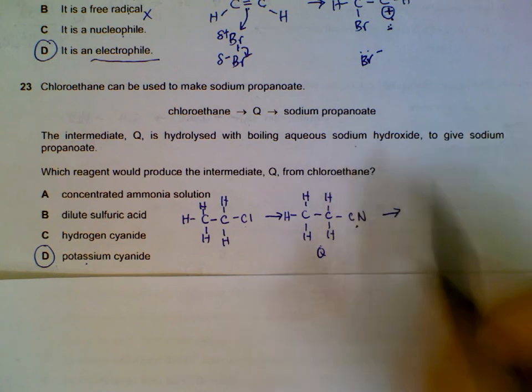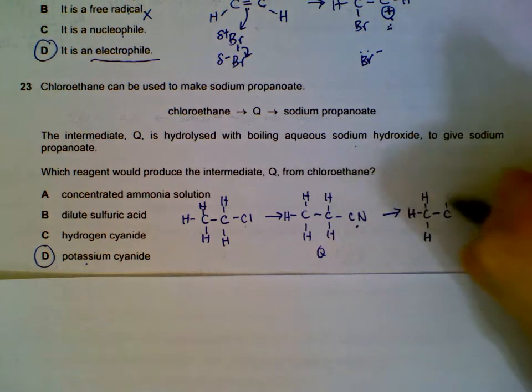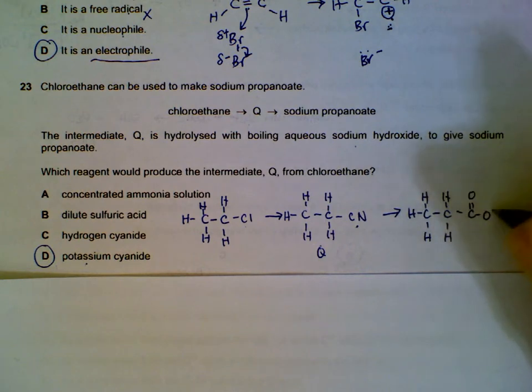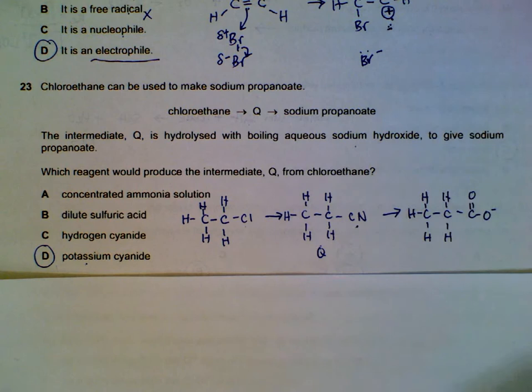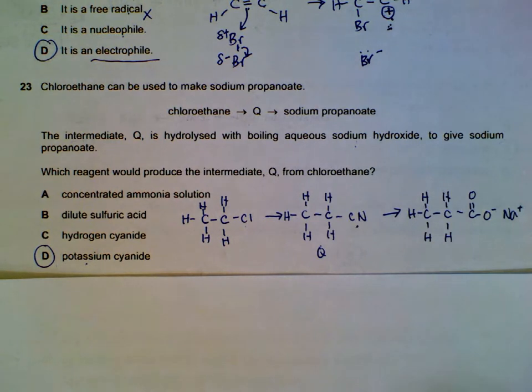Reacting with sodium hydroxide, we will change the CN to COO minus. And because we use sodium hydroxide, we will get sodium propanoate.